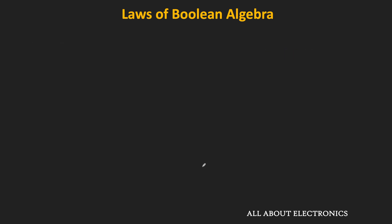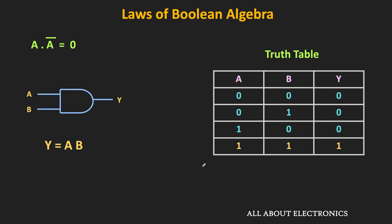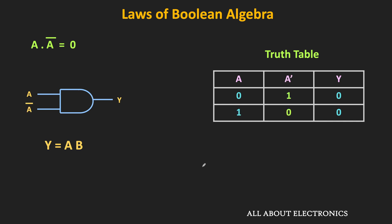The next law is a·ā = 0, where ā is the complement of a. From the truth table of the AND gate, when a is 0, then ā equals 1, and when a is 1, then ā equals 0. So in any case, one of the inputs of the AND gate is always 0. Therefore the output of the AND gate will always remain 0, meaning y = 0. That is why the AND operation of a and ā is equal to 0.